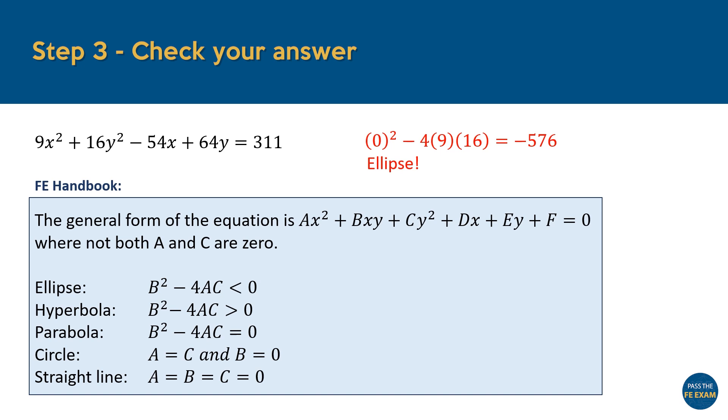Substituting these values into the condition b squared minus 4ac, we find that the expression equals negative 576. Since the value is less than 0, it confirms that the curve is indeed an ellipse. This method provides a useful cross-check for visual inspection, ensuring that our answer is consistent and accurate.